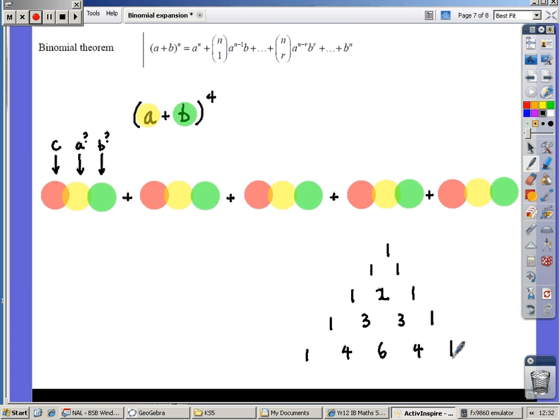If you can generate the pattern, you can generate your coefficients. So, we look along this - we have a power 0 at the top, a power 1, a power 2, a power 3, and the one we're interested in are these coefficients on this line for the expansion to a power 4: 1, 4, 6, 4, 1.